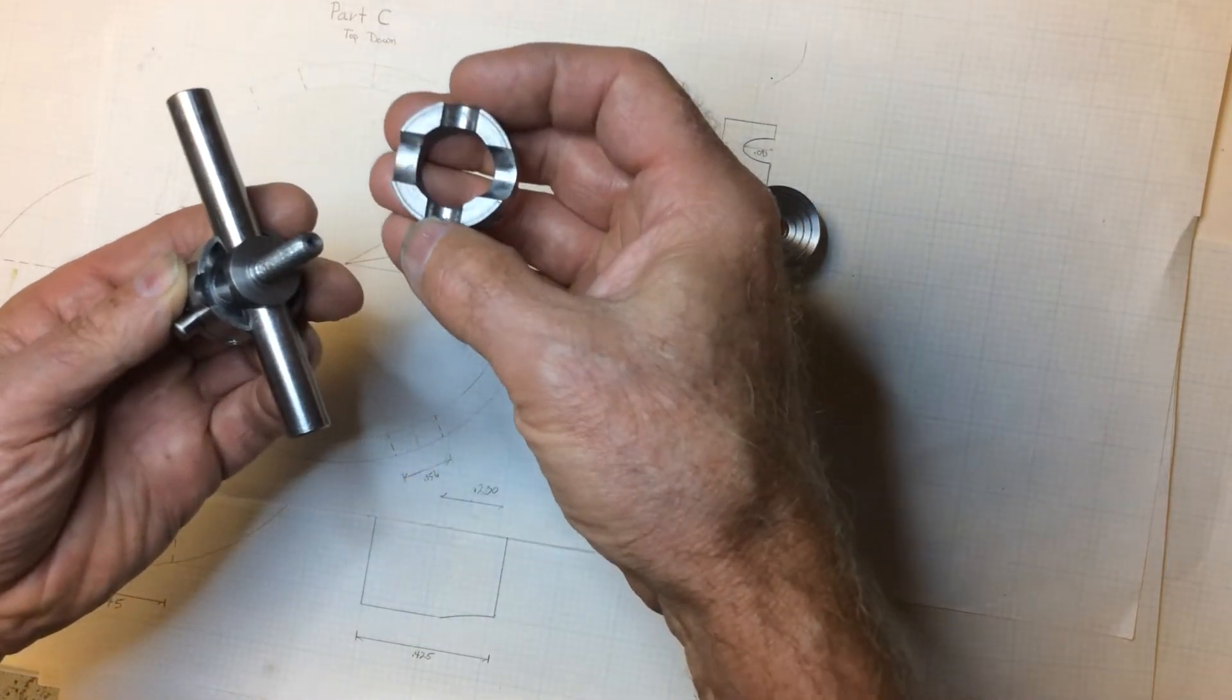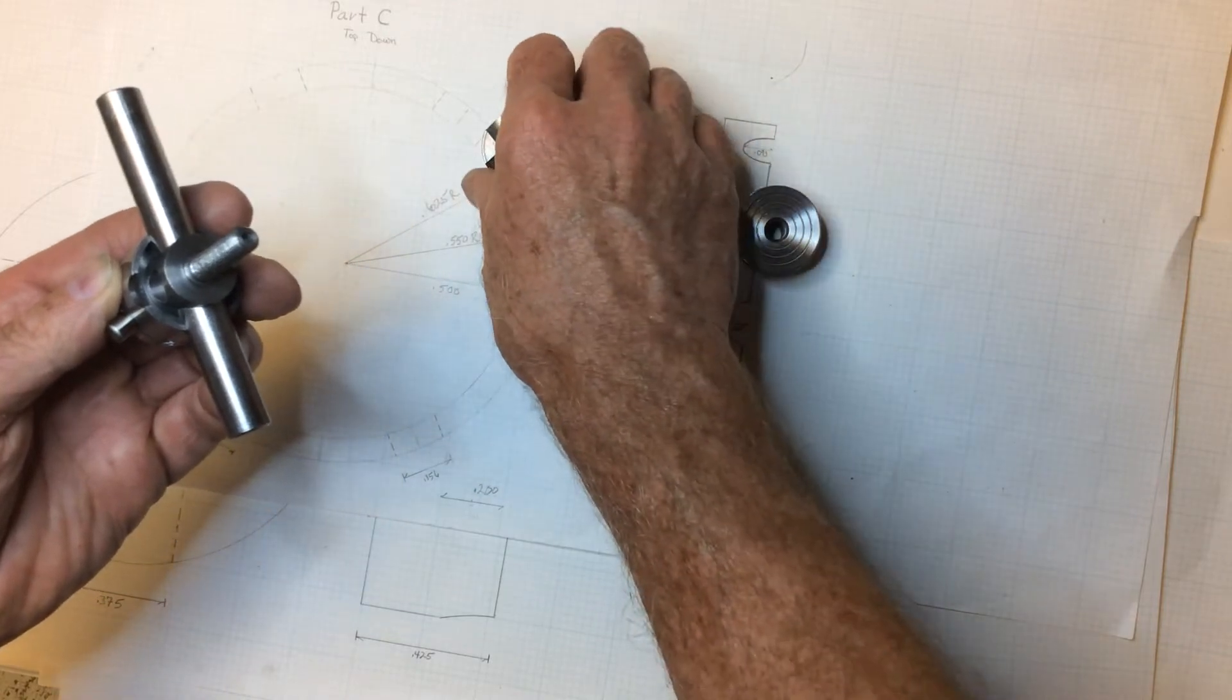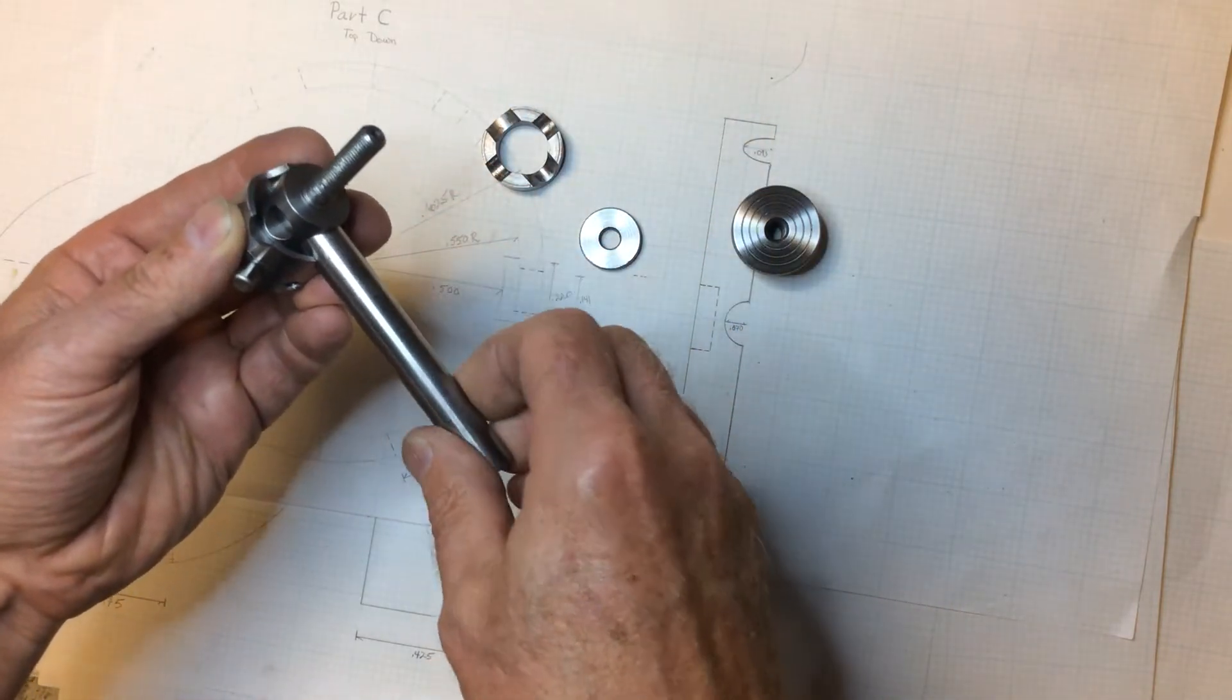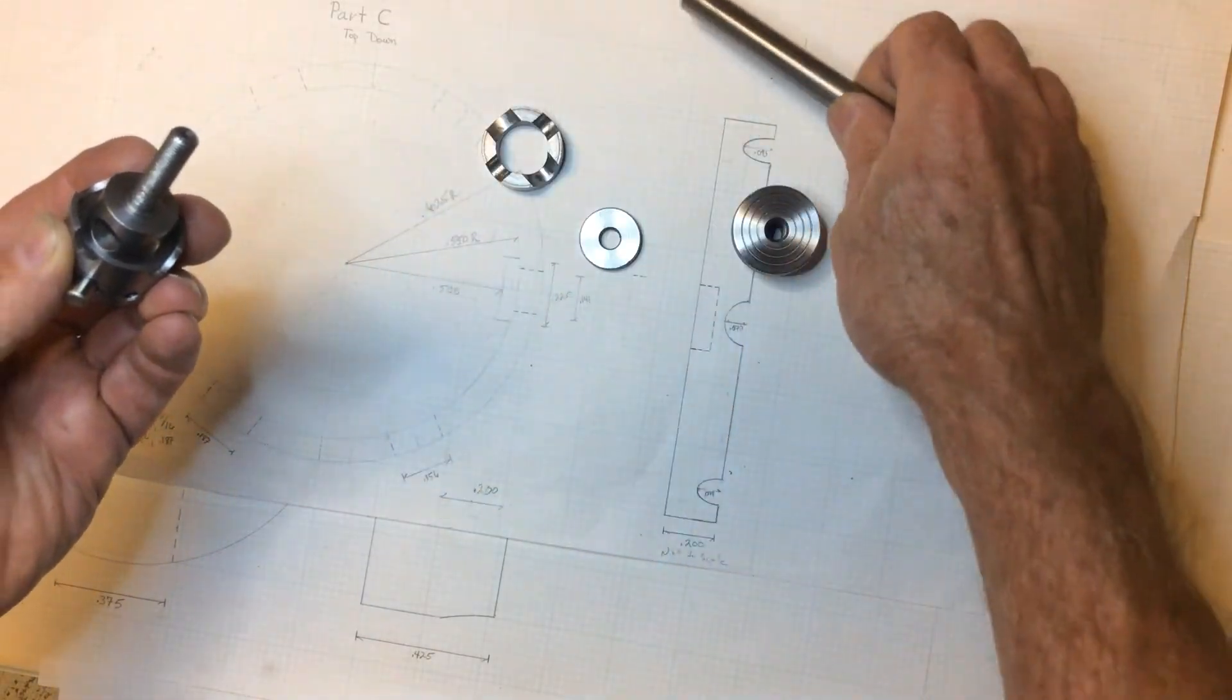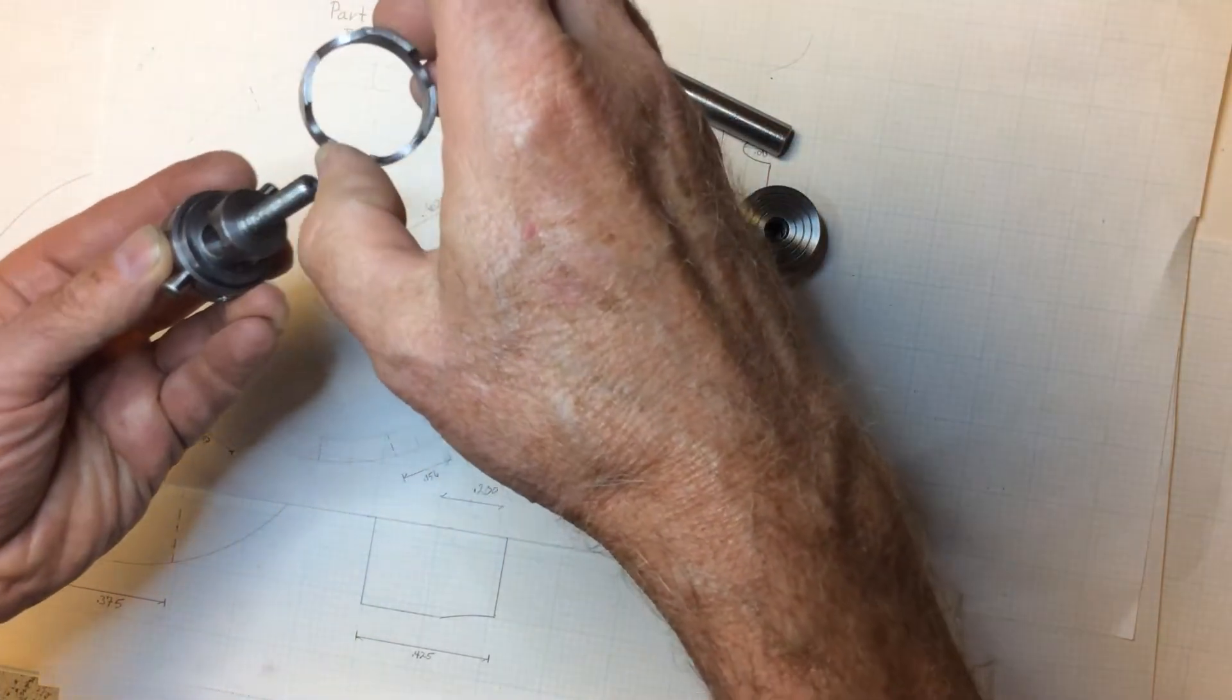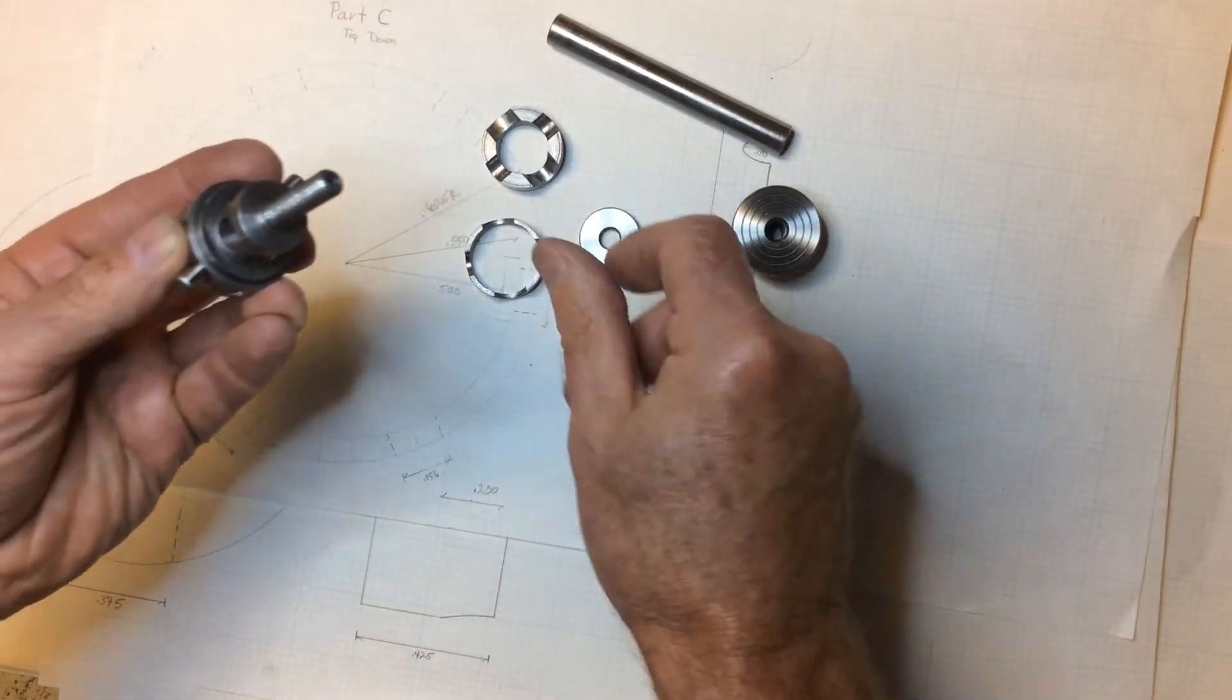Next off comes this little donut with four holes in it, arranged at 90 degrees to each other. Out comes the half inch rod. Next comes this second donut with corresponding four holes in it.